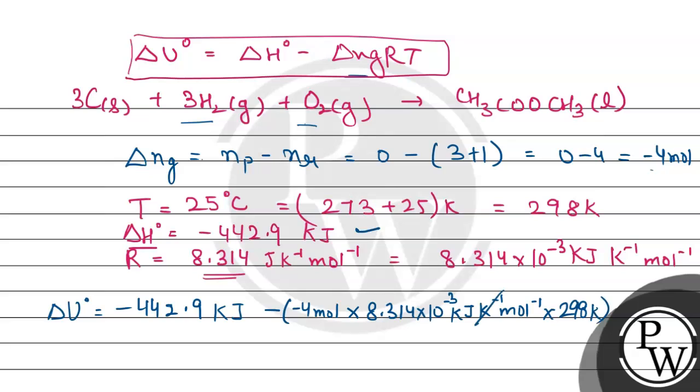First we will check units. Per Kelvin and Kelvin get cancelled, mole and per mole cancel. We can see kilojoule remains and kilojoule remains, which means they can be added or subtracted. We have -442.9 minus.